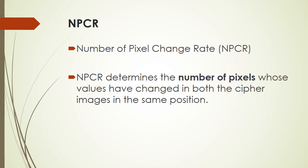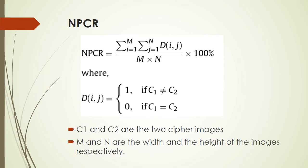NPCR determines the number of pixels whose values have changed in both cipher images at the same position. The expression for evaluating NPCR is given here, where c1 and c2 are the two cipher images, and m and n are the width and height of the images respectively.